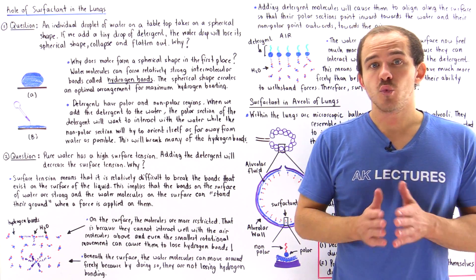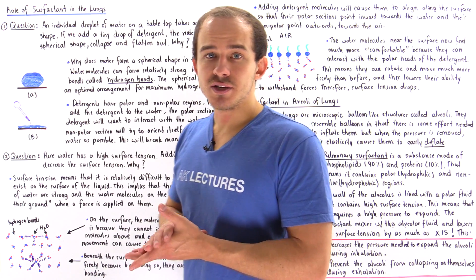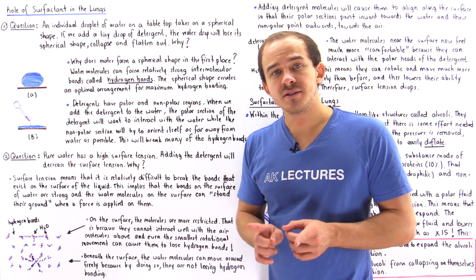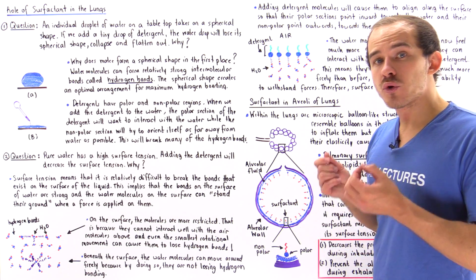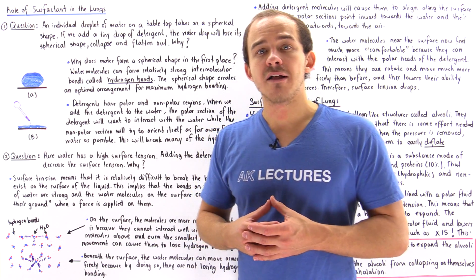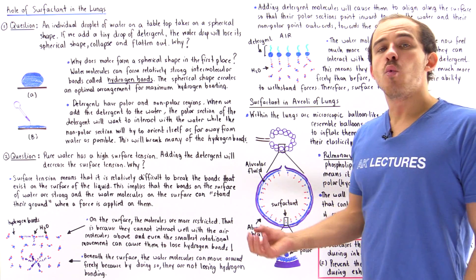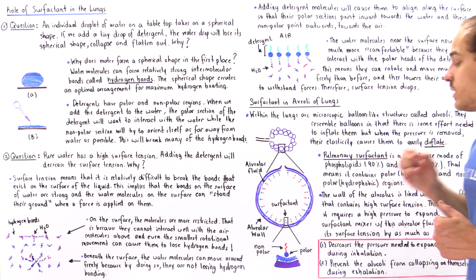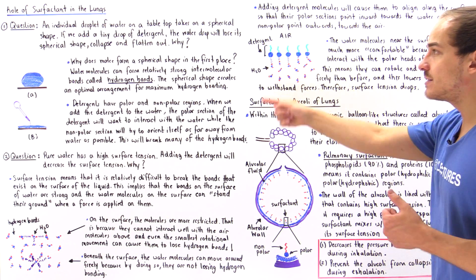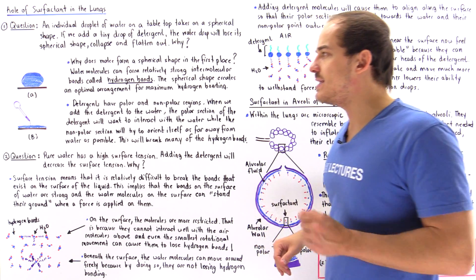Inside the alveoli of our lungs, we have a special substance known as the pulmonary surfactant, which consists of phospholipids and proteins. The pulmonary surfactant decreases the surface tension of the fluid found inside the alveoli, and that decreases the pressure needed to inflate those alveoli during inhalation. It also prevents the alveoli from collapsing onto themselves when we exhale. Overall, the surfactant makes the process of breathing much more efficient and easy to carry out.